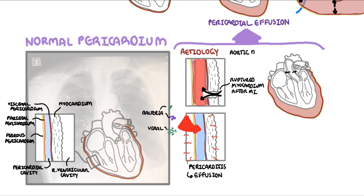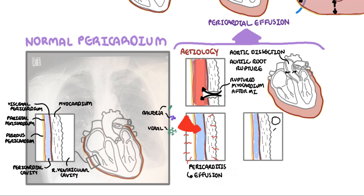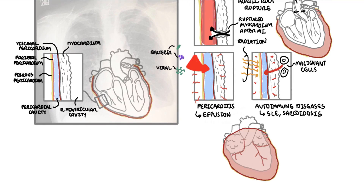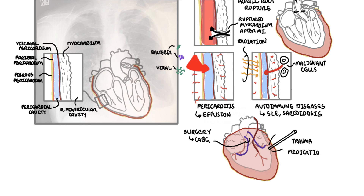Other vascular causes of pericardial effusion include aortic dissection and aortic rupture. Malignant cells can infiltrate the pericardium, causing a malignant pericardial effusion. Radiotherapy can also damage the pericardium, causing a pericardial effusion. Autoimmune diseases including systemic lupus erythematosus and sarcoidosis are also associated with effusions in the pericardium. Trauma, whether blunt or penetrating injury, can lead to effusions accumulating in the pericardial sac. Iatrogenic causes include following cardiothoracic surgery, such as a coronary artery bypass procedure.